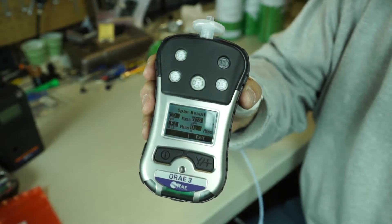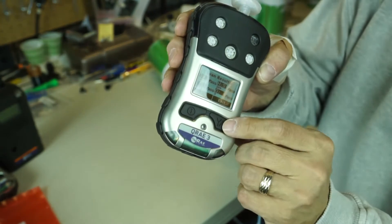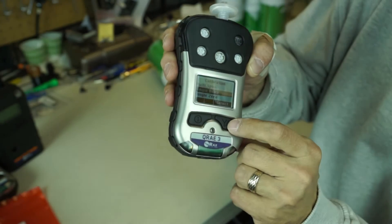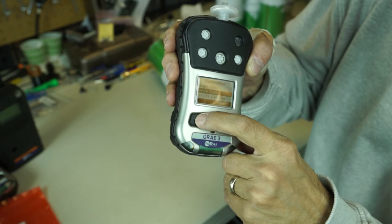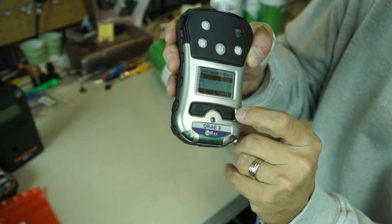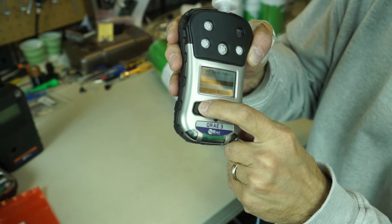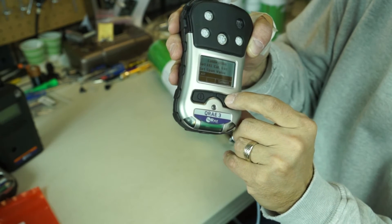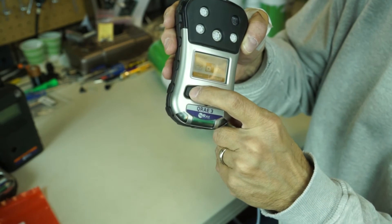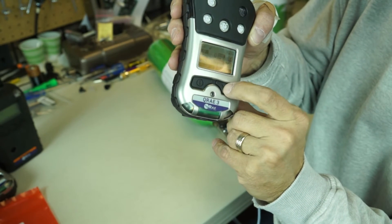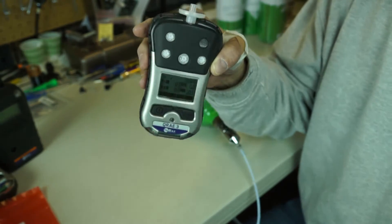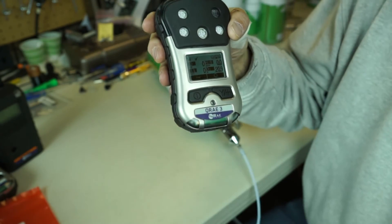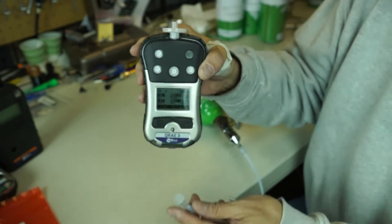And all I have to do is hit the exit choice, exit. Scroll down to where it says exit. Scroll over to the exit on the main menu. And I'm back in business. Instrument's been fully calibrated. 0, 0, 0, 20.9.